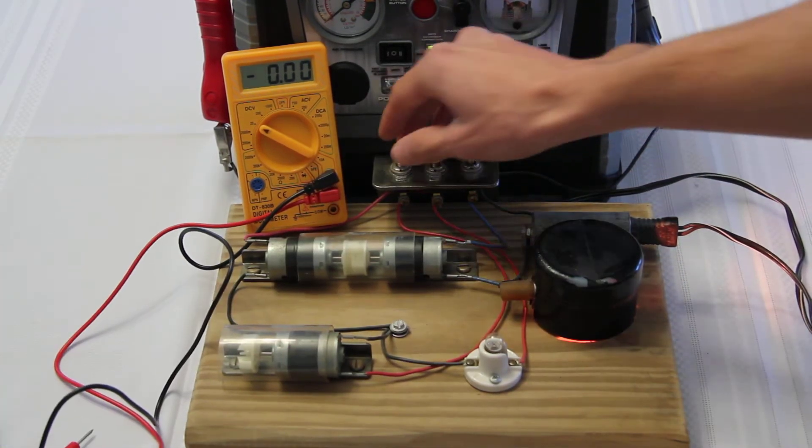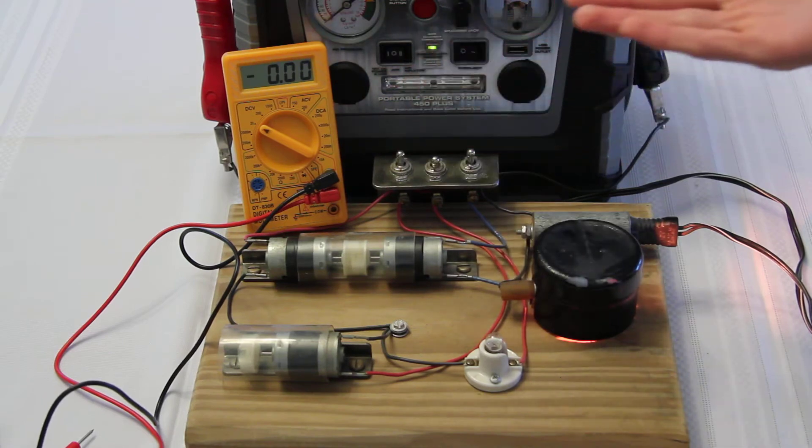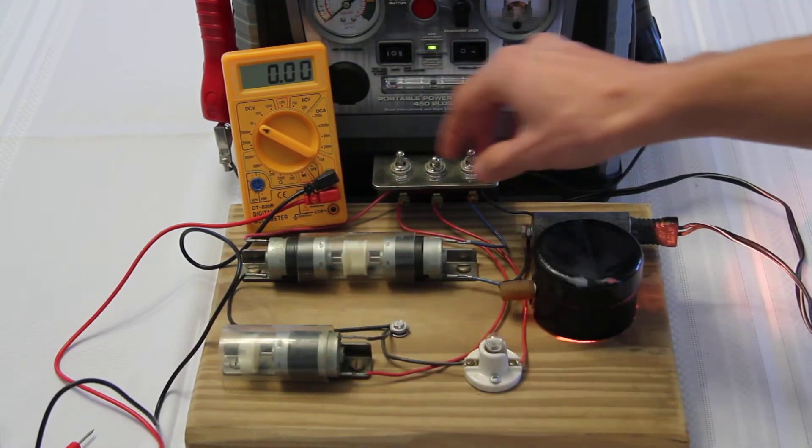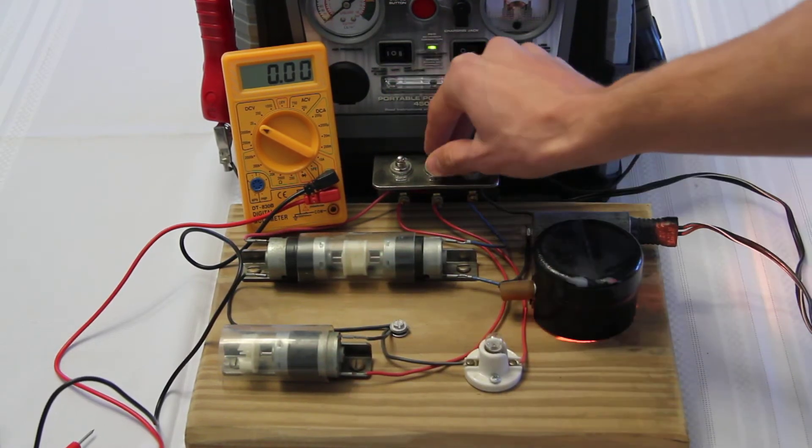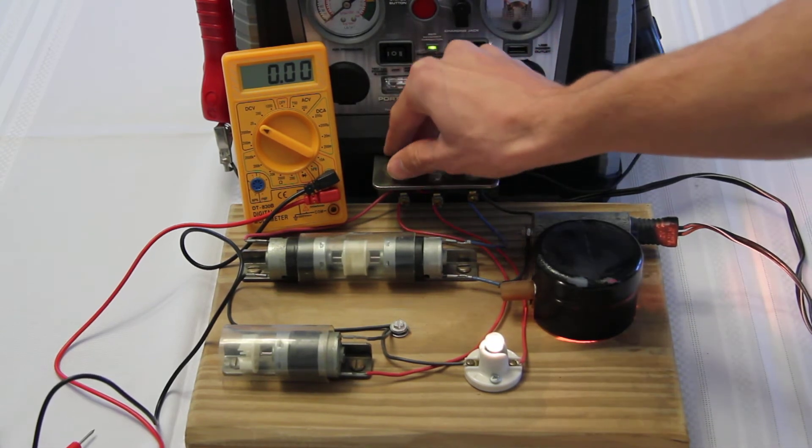And then if I turn on these different motors here, you can see how it pulls down as it draws current. And turn on the light bulb, same thing. Or I could turn on both, and it really pulls it down.